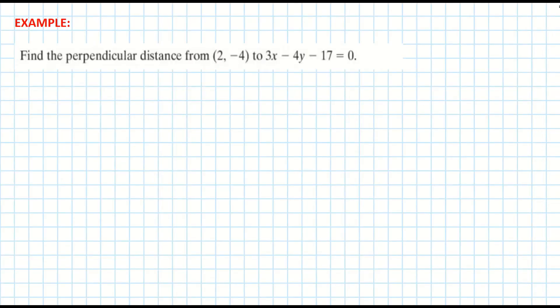This example from our text and tests is asking us to find the perpendicular distance from the point (2, -4) to the line 3x - 4y - 17 = 0.